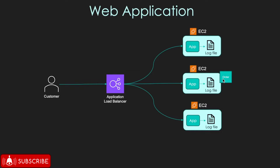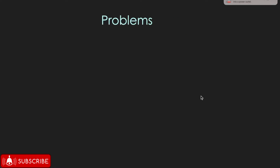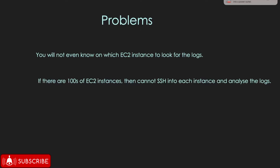Now, the customer is reporting that he has not received the order. So you will need to analyze where exactly the problem is, and you will come to the log files for performing such analysis. But there are a few problems associated with log analysis. The first problem is you will not even know on which machine or server you should look for the logs. If there are hundreds of EC2 instances, then you cannot SSH into each instance and analyze the log.